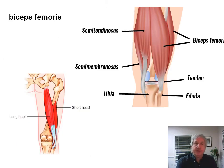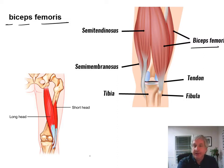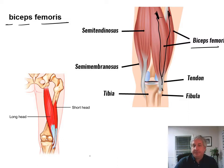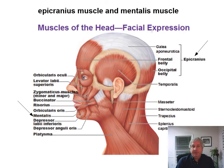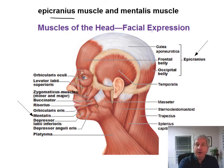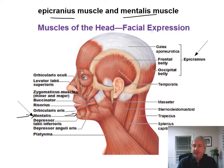The biceps femoris — that's a two-headed muscle in the femoral region. Here are the two heads of the muscle coming down and attaching to the fibula. The epicranius muscle: cranius means cranial — the head — and epi means around. The mentalis muscle would be in the chin, in the mental region. So knowing these regions makes it easier to understand where muscles are.